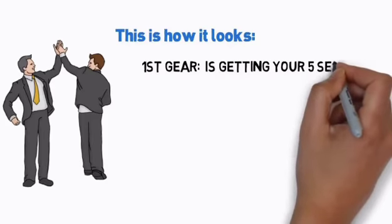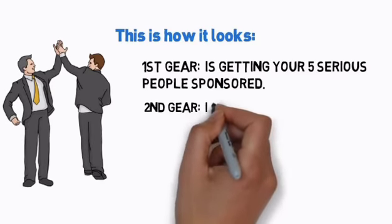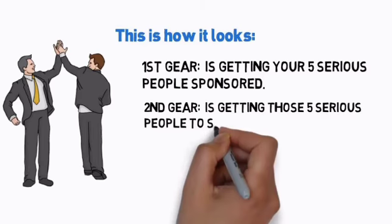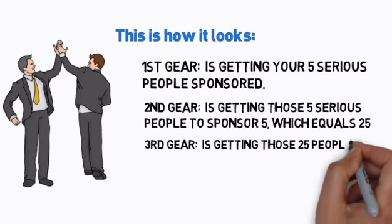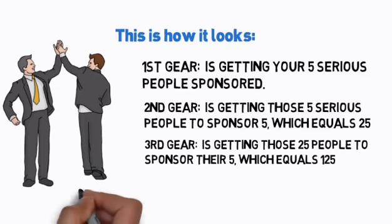First gear is getting your five serious people sponsored. Second gear is getting those five serious people to sponsor five, which equals 25. Third gear is getting those 25 people to sponsor their five, which equals 125.